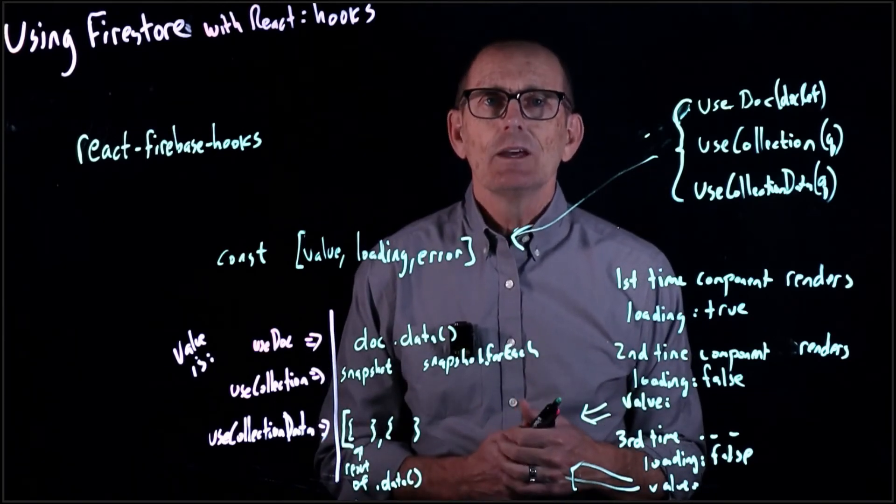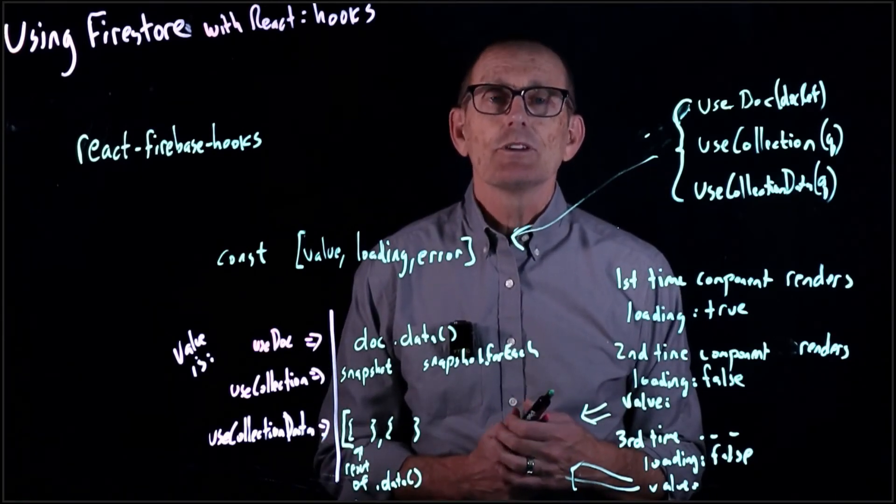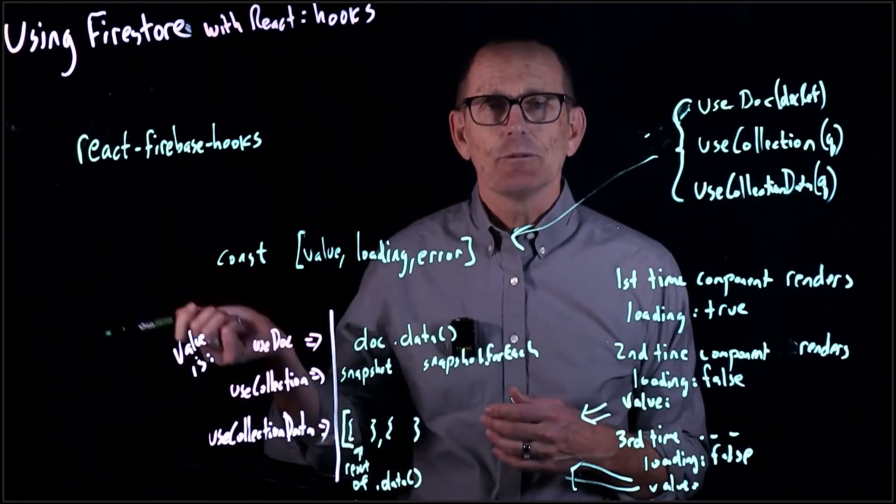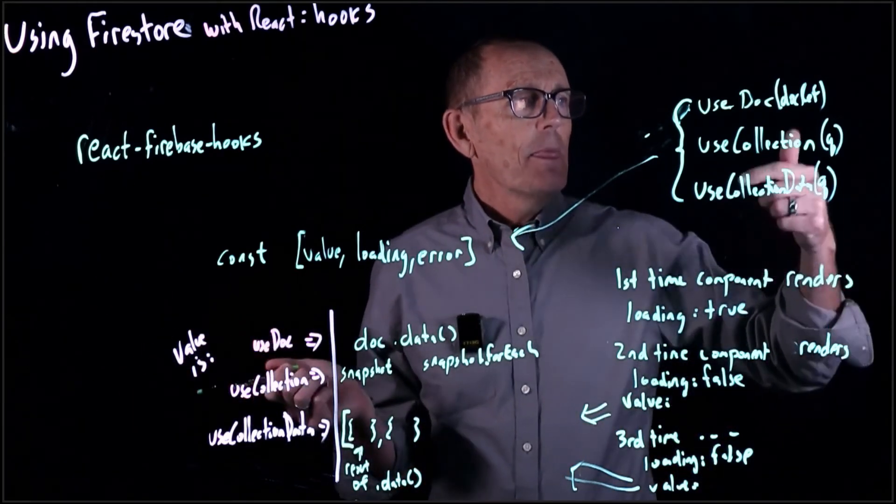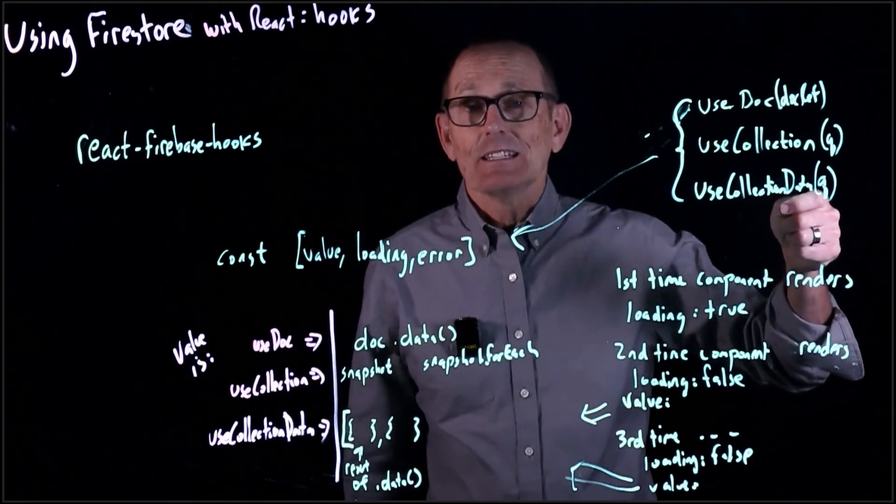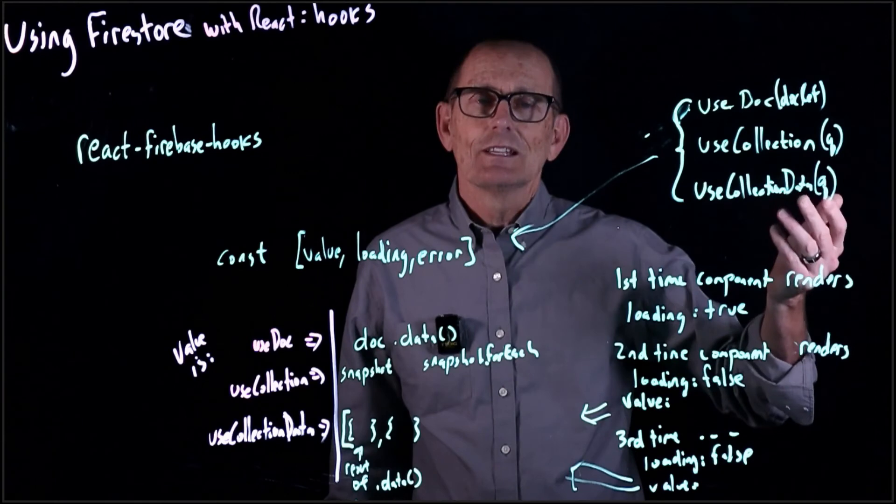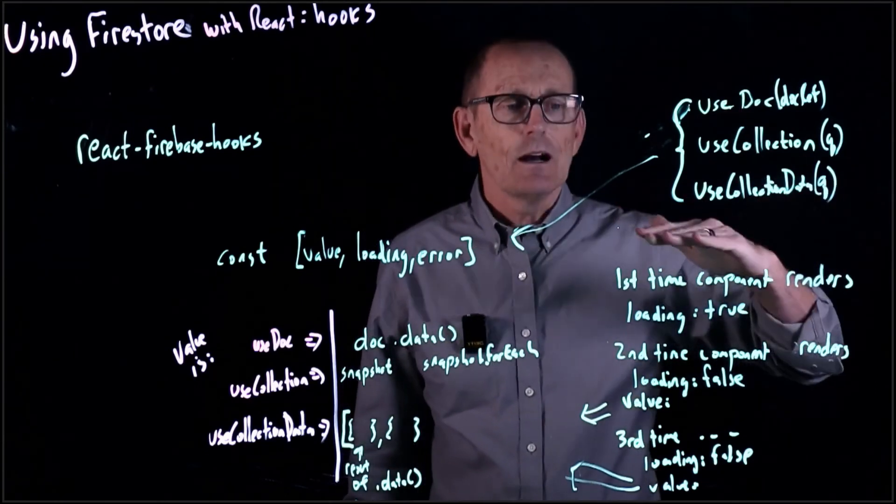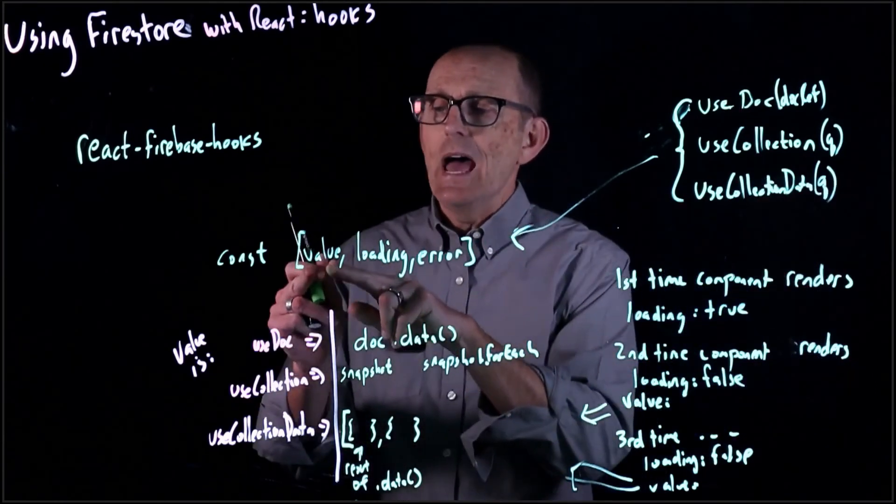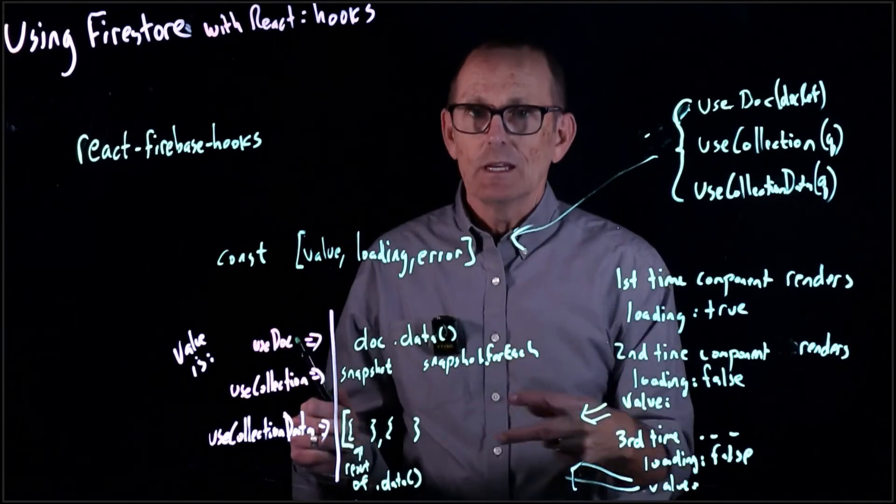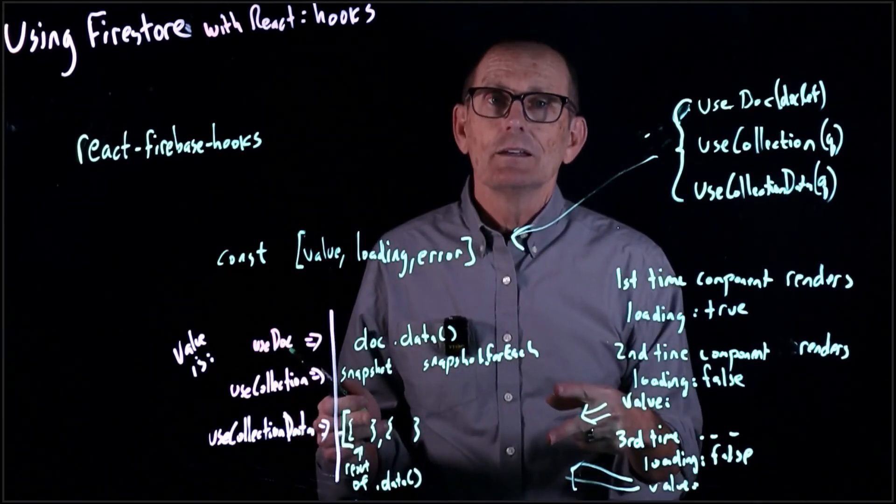And then let's say something about those restaurants changes. Either someone on a different machine adds a restaurant, and all of a sudden, useCollectionData has a listener installed, and it will notice that the listener has changed, and it will again cause this component to re-render, and now our value is going to be an array with the modified restaurant.